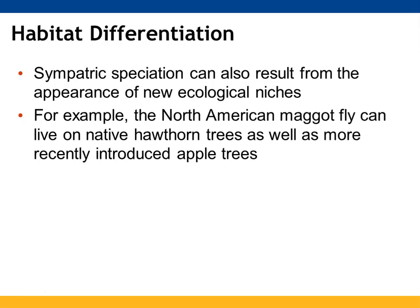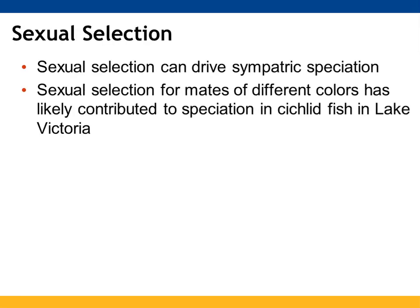Habitat differentiation can occur as a result of new ecological niches forming. For example, apple trees introduced into an area provide a more suitable environment for maggot flies, which can also live on hawthorn trees — having this new food source may lead to speciation. Sexual selection can also be a source of sympatric speciation. By having a preference for certain mates, those alleles are more likely to be passed on, and that preference could lead to speciation. We see this in the six-foot fish.